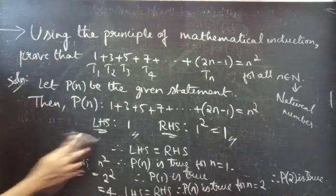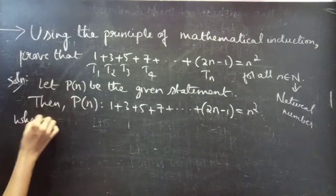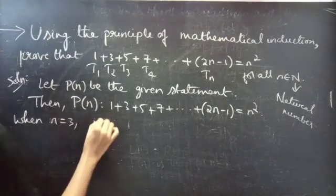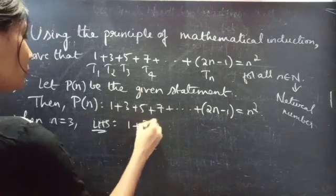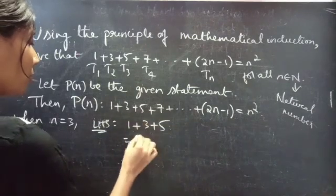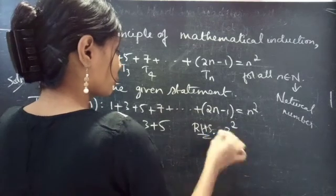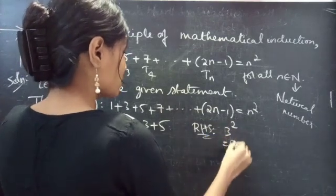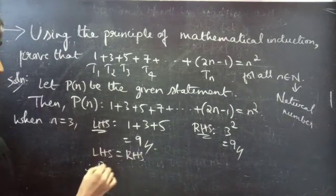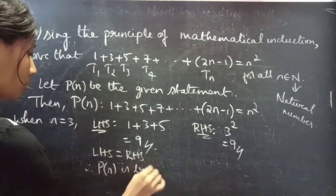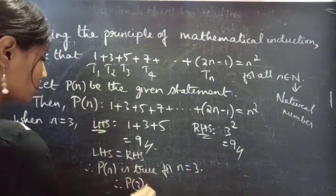Let's check for n equals to 3. We will take the sum of the first 3 terms in LHS: 1 plus 3 plus 5. That is 1 plus 3 equals 4, 4 plus 5 equals 9. Coming to RHS, put n equals to 3, then you will get 3 squared equals to 9. Here also LHS equals to RHS. Therefore, P of n is true for n equals to 3, that is P of 3 is true.